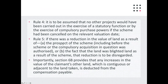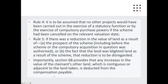Rule four: it is to be assumed that no other projects would have been carried out in the exercise of a statutory function or by the exercise of compulsory purchase powers if the scheme had been cancelled on the relevant valuation date. Rule five: if there was a reduction in value of land as a result of the prospect of the scheme — including before the scheme or compulsory acquisition was authorised — or the fact that the land was blighted land as a result of the scheme, that reduction is to be disregarded. And importantly, Section 6B provides that any increases in the value of the claimant's land contiguous or adjacent to the land taken is deducted from the compensation payable.